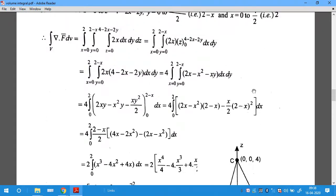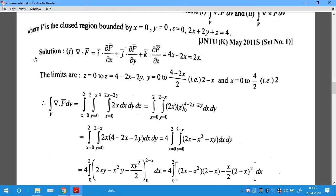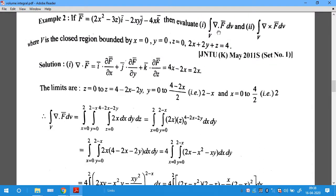The formula for ∇·F̄ is: i·∂F̄/∂x + j·∂F̄/∂y + k·∂F̄/∂z. Differentiate partially with respect to x, y, and z for the i, j, k components, then take the dot product.